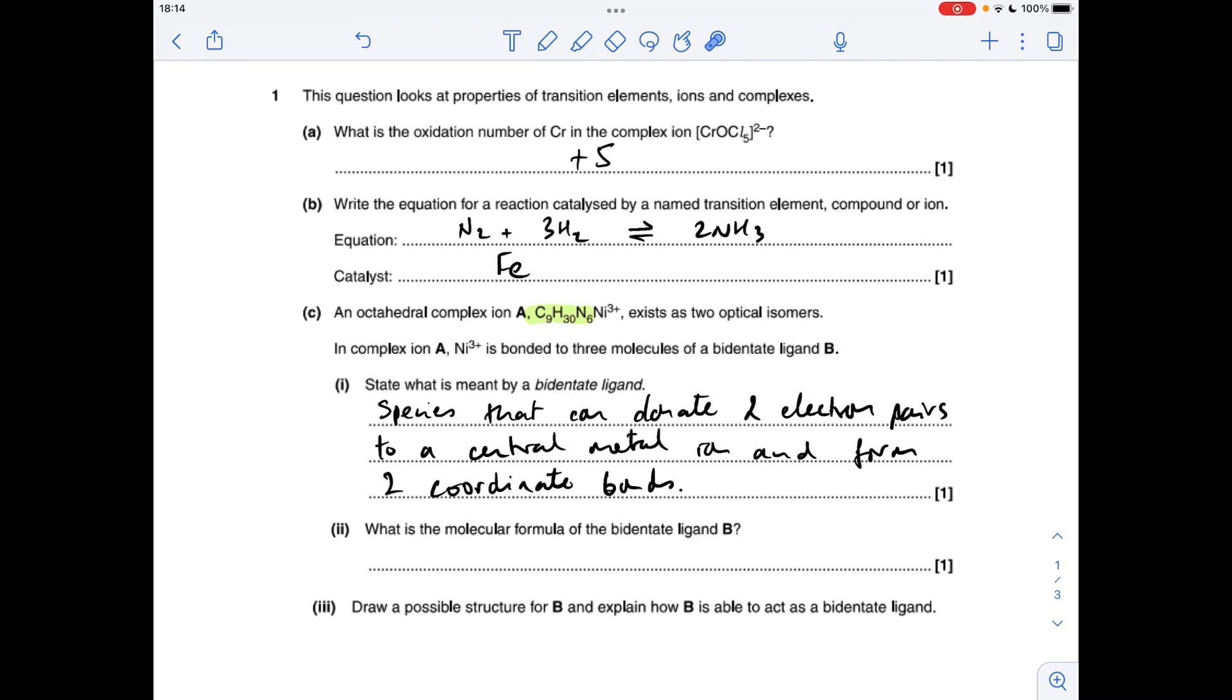Next part, we've got to work out the molecular formula of the bidentate ligand B. So the complex obviously has the central nickel 3 plus ion, and then all of these atoms collectively make the three bidentate ligands. So all we need to do is divide the atoms by three to get the formula of the ligand. So there's the formula there, C3H10N2.